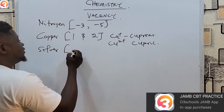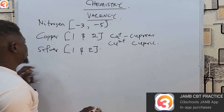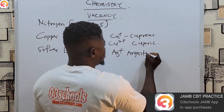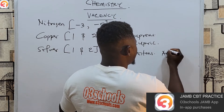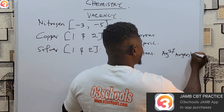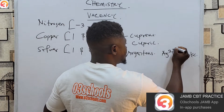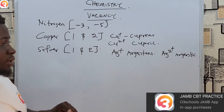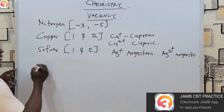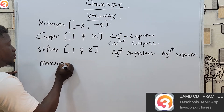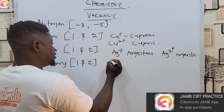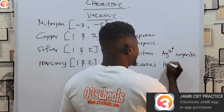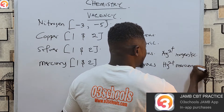Silver also has a variable valency of one and two. Silver is Ag. Ag⁺ is called the argentous ion, while Ag²⁺ is called the argentic ion. Mercury also has variable valency of one and two. Hg⁺ is called the mercurous ion, while Hg²⁺ is called the mercuric ion.